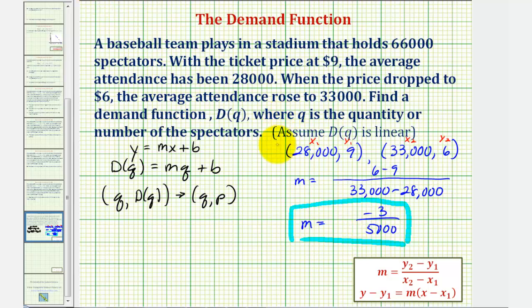So if we use this slope and this point, the equation of our function would be, instead of y, we'd have D(q) minus y₁ or minus 9 equals the slope,